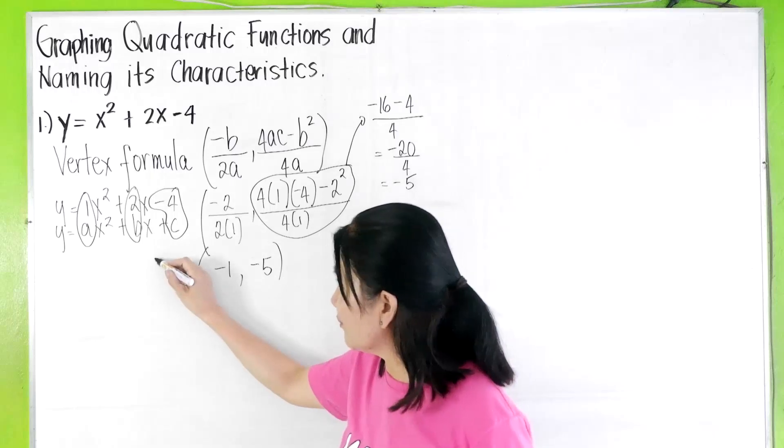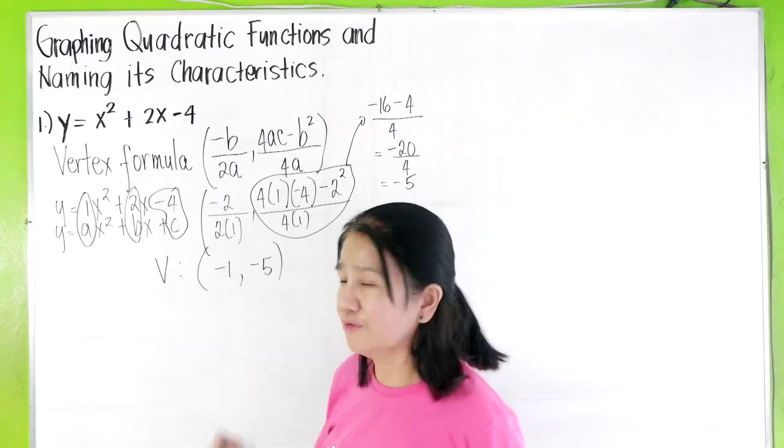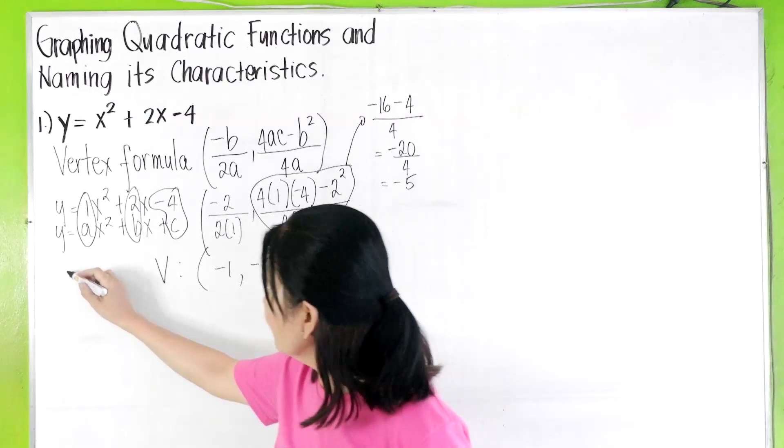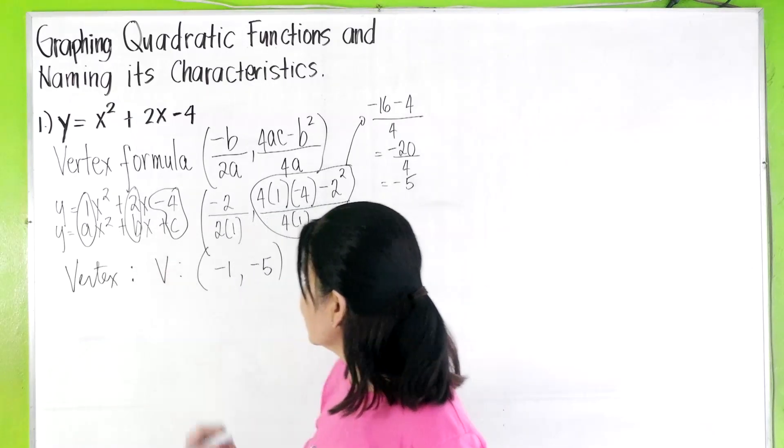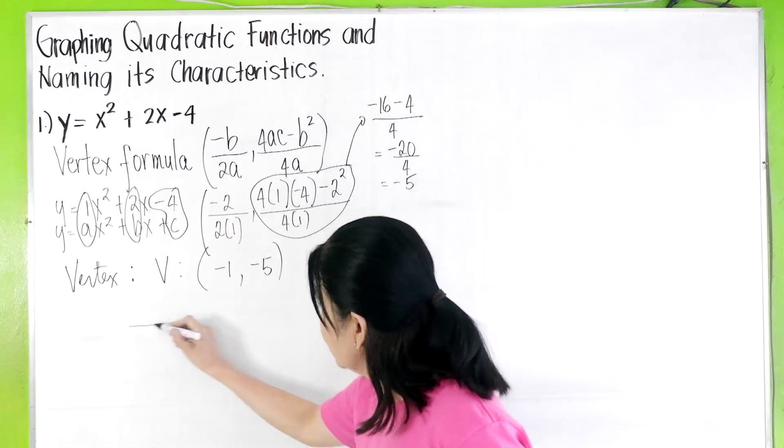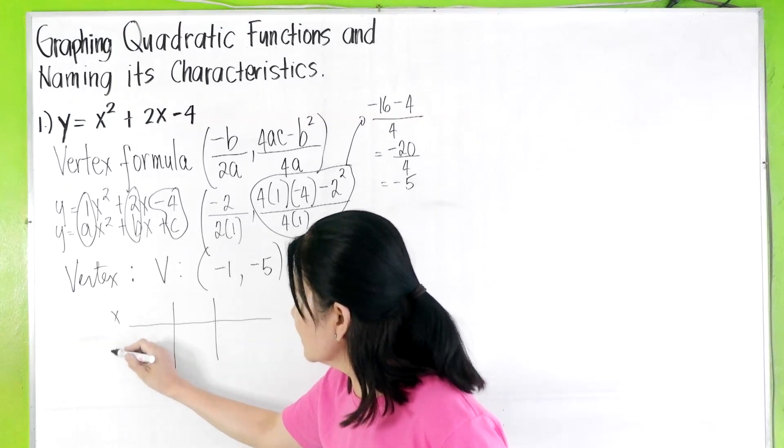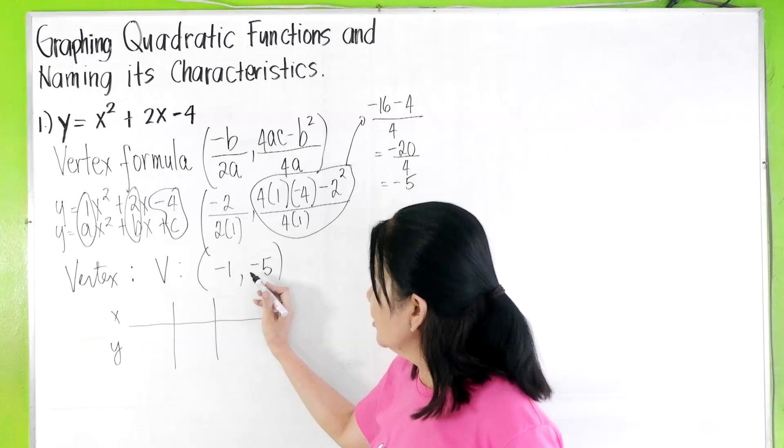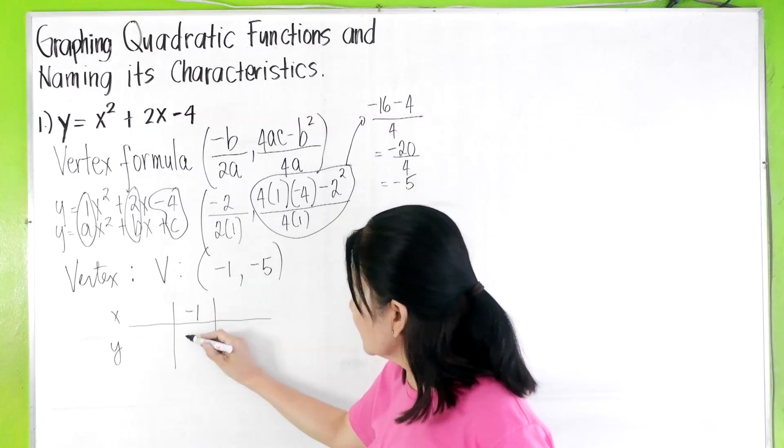So this is now your vertex. V for vertex. Once you have the vertex, you make the table of values. You put the x's here and the y's here. You write the vertex at the middle.